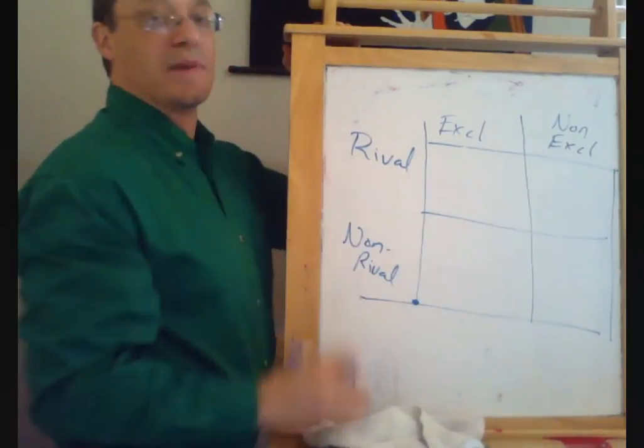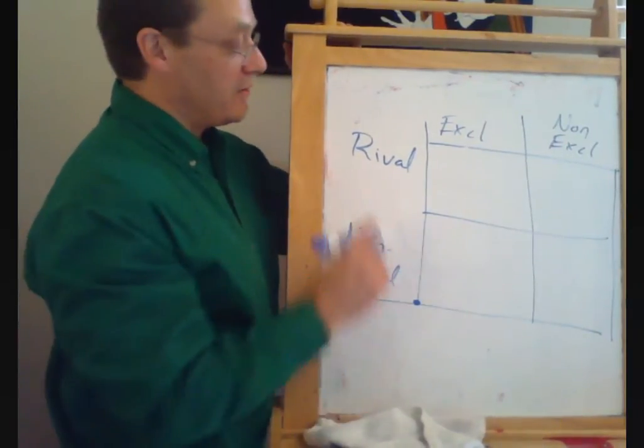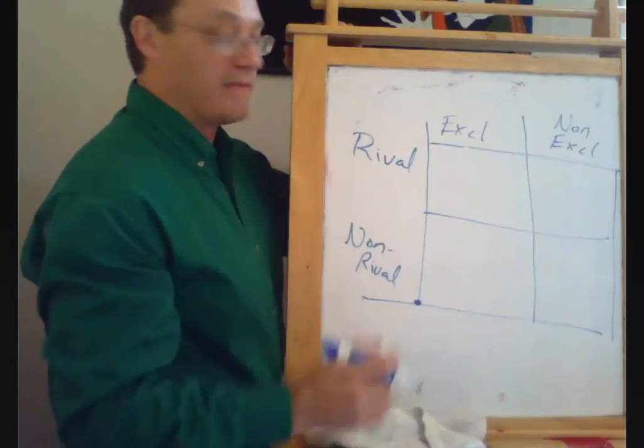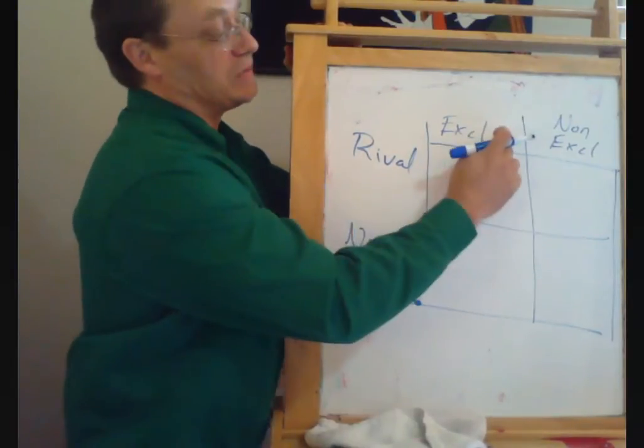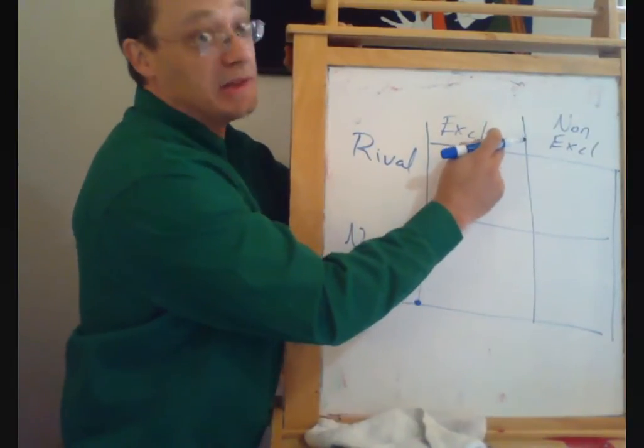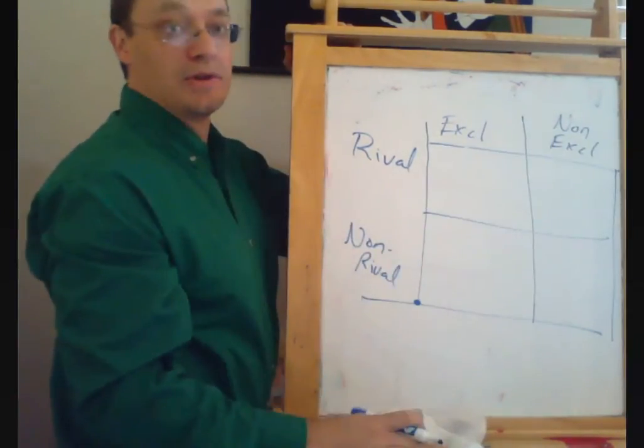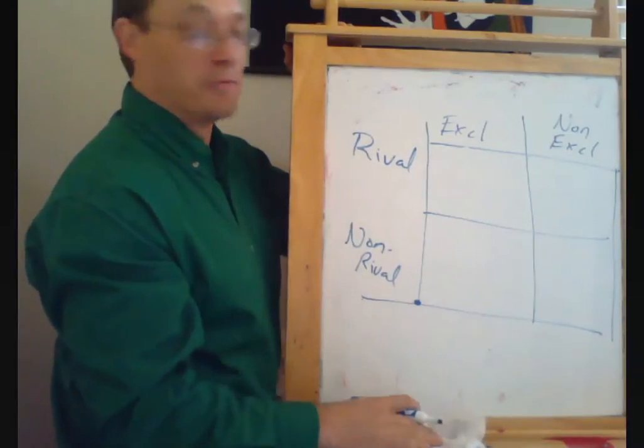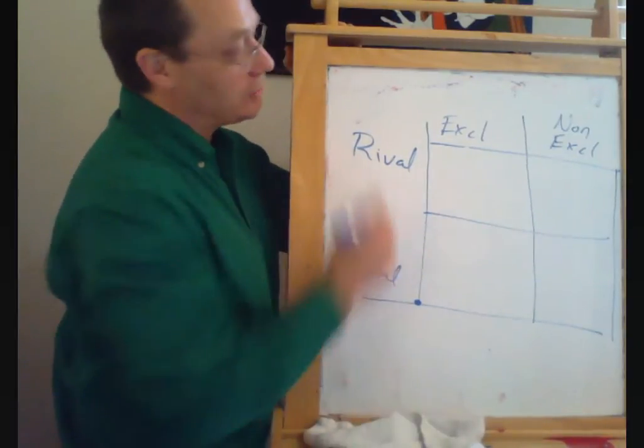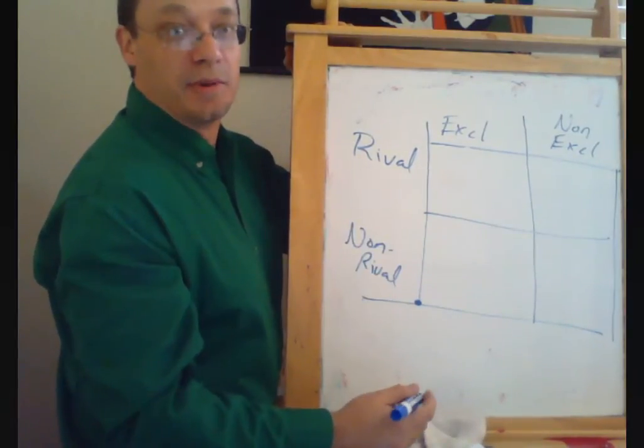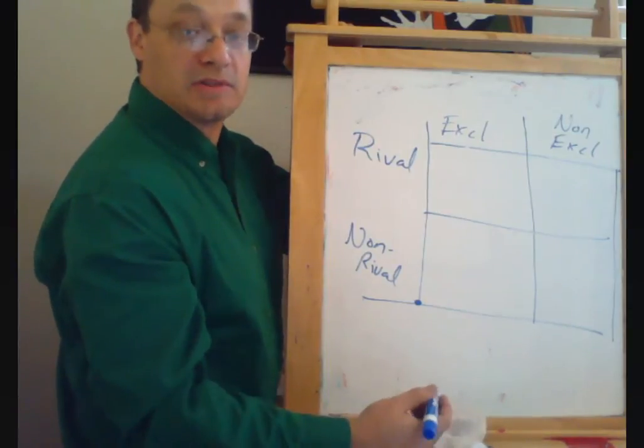We're not going to worry about this continuousness for now. We're just going to say it's either rival or non-rival. Likewise, we're not going to worry if it could be really, really excludable or kind of semi-maybe excludable or totally non-excludable. We're just going to call it black and white, zero and one here. So goods which are rival and excludable are most of our normal goods that we think about.